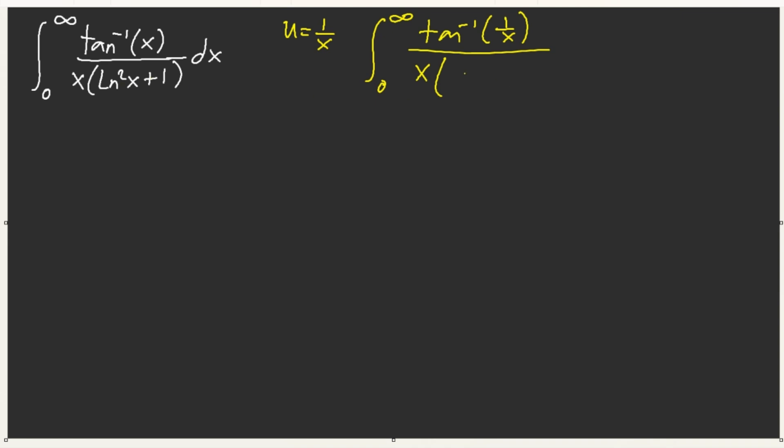And then, ln square of 1 over x gives us negative ln of x. But because it's being squared, it makes no difference. Now, we can easily add these two up. And this gives us pi over 2.